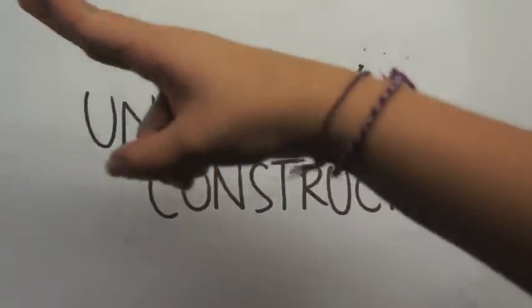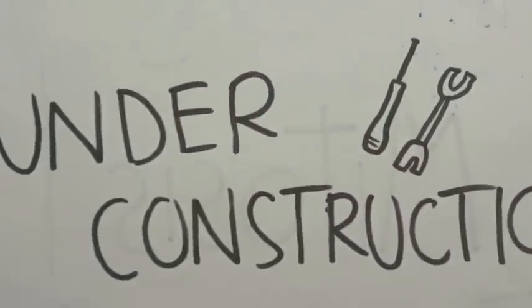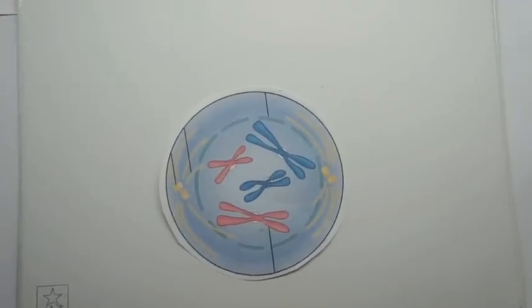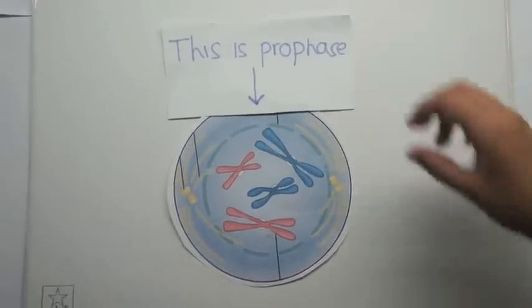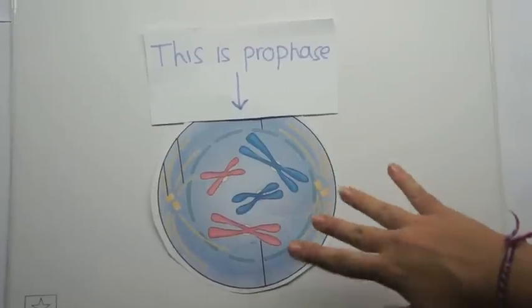Under construction! This is prophase, where the chromosomes become visible and the centrals separate and take up positions on the opposite sides of the nucleus.